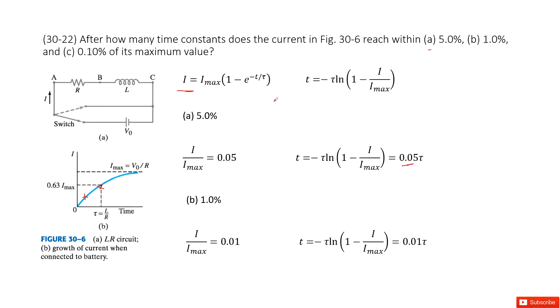The next one, how much time is needed for the current to reach 1% of the maximum value. So 1% is closer to zero. So we input the ratio I over Imax as 0.01, we get a smaller number, which matches with this picture.